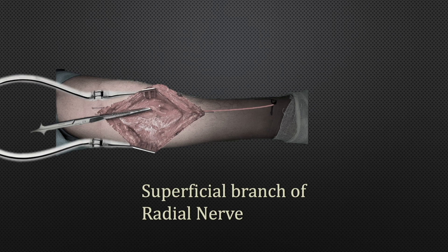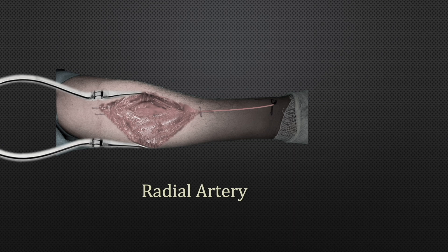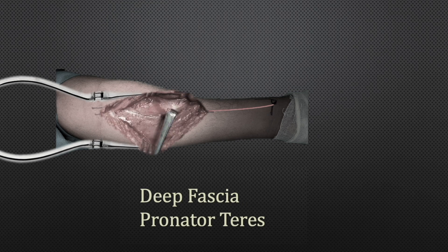The superficial branch of the radial nerve is in close proximity with the radial artery in the proximal third, so gently dissect and retract it laterally. Once the superficial branch of the radial nerve has been retracted laterally, you are able to clearly see the radial artery. You need not separate the radial artery proximally — you simply retract it medially whenever approaching the proximal third of the radius.